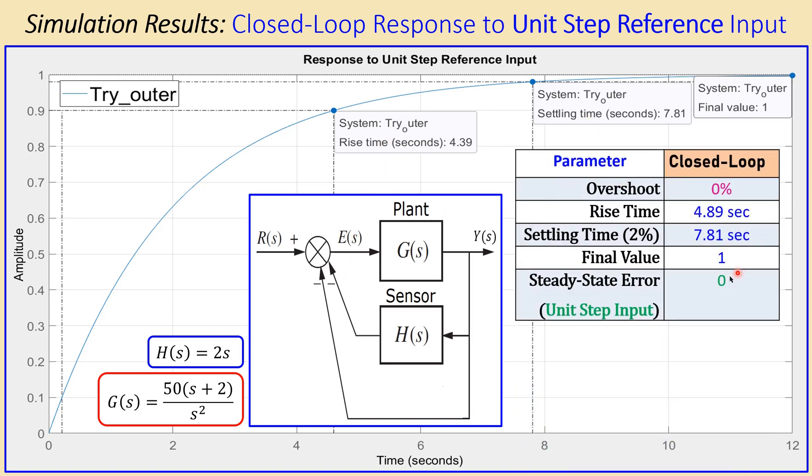For this case you see the overshoot is 0, the rise time and the settling time also given, the final value is 1. That means there is no error for unit step input. Of course we were not interested in the step response, we were interested in the unit ramp reference input. But this is of course important to check the stability, so the system is definitely stable.